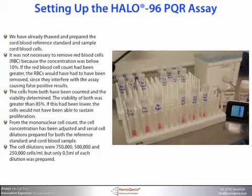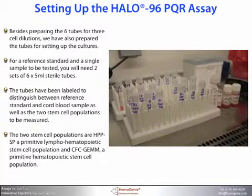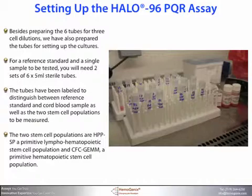The cell dilutions were 750,000, 500,000, and 250,000 cells per milliliter, but only 0.5 milliliters of each dilution was actually prepared. Besides preparing the six tubes for the three cell dilutions — three for the reference standard and three dose concentrations for the sample — we've also prepared tubes for setting up the cultures. For a reference standard and a single sample to be tested, you will need two sets of 6 by 5 milliliter sterile tubes.